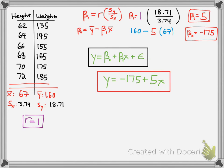So going back to this equation simply plug in those values so our y-intercept is negative 175 and our slope is 5 and you multiply that by your x and that is your answer.